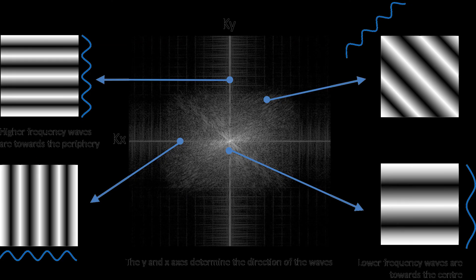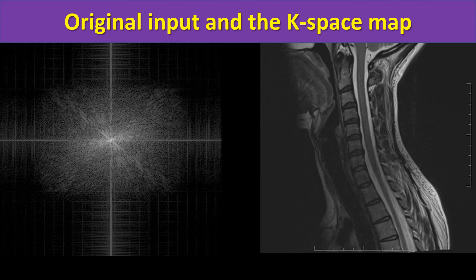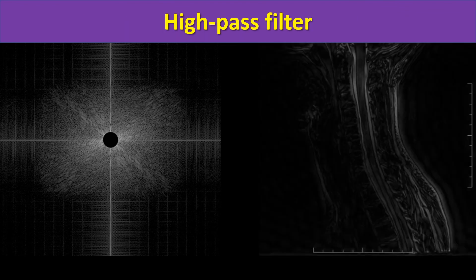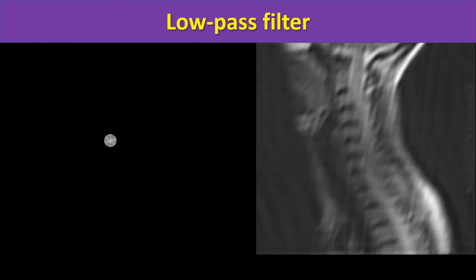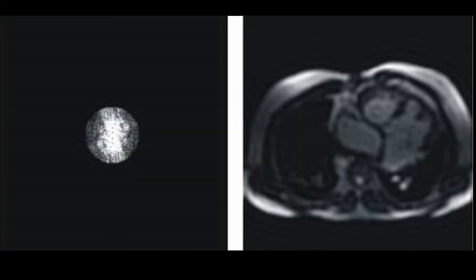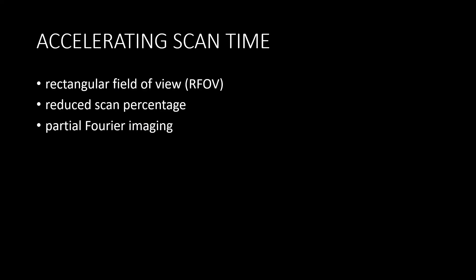To summarize: the periphery gives better spatial resolution; the center gives better contrast resolution. Looking at a spine image — with the complete k-space the image is normal. If you remove the center of k-space, spatial resolution is intact but contrast is lost. If you keep only the central portion, you get contrast but lose edge definition.